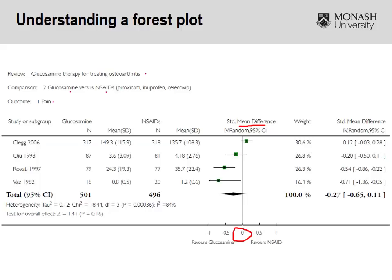For any continuous outcomes, if the confidence intervals include 0, that tells us there is no statistical difference between the two groups. Looking at the final result, the standardized mean difference is a reduction of pain by 0.27 points — not a whole lot. The confidence intervals go from minus 0.65 to 0.11, so they include 0, indicating no statistical difference. This is also shown graphically with the overall pooled estimate hitting the line of no effect, indicating no difference between the two groups.